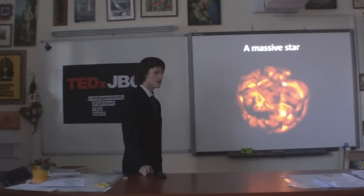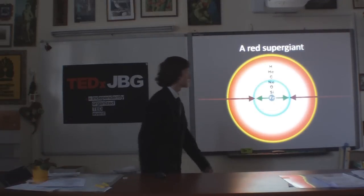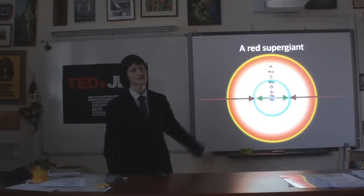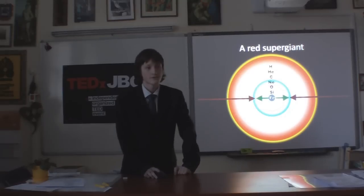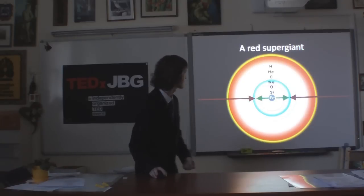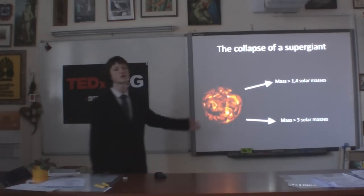A massive star on the other hand is not satisfied with only carbon. It fuses neon, oxygen, silicon, and finally iron. Once at iron, no more energy is released and the star simply collapses because of its own gravity. It cannot withstand its own gravity and it becomes a supernova.